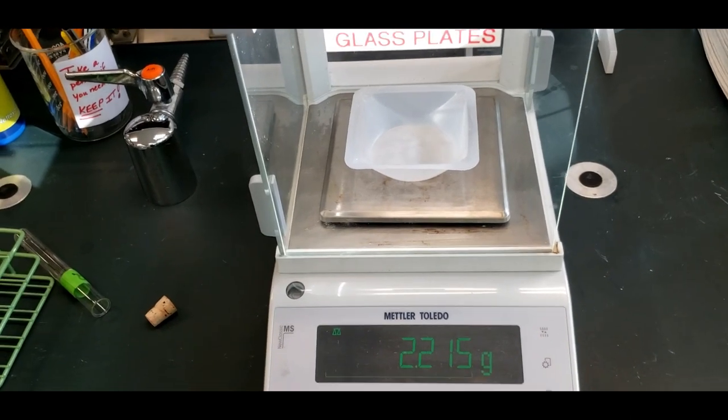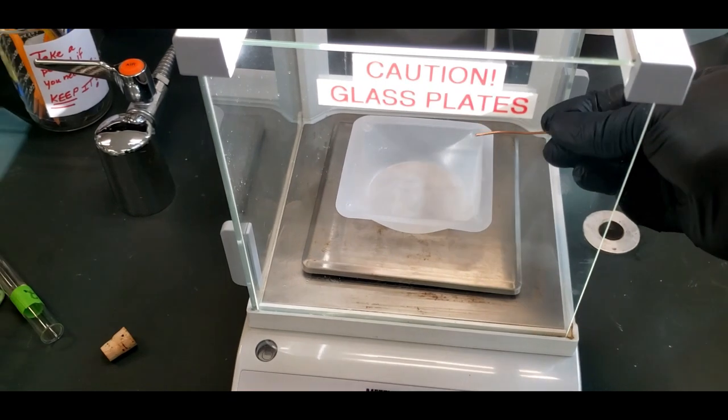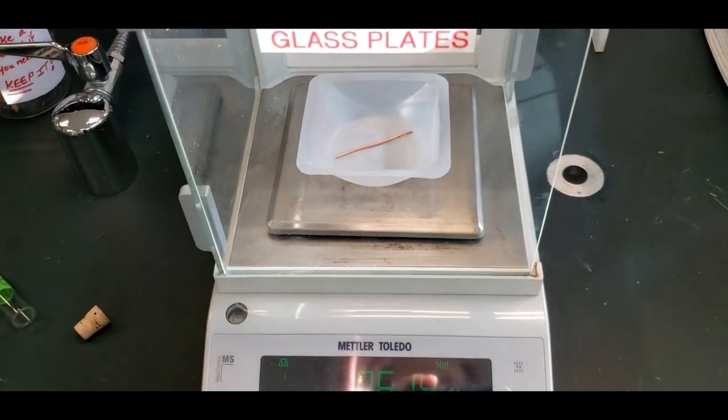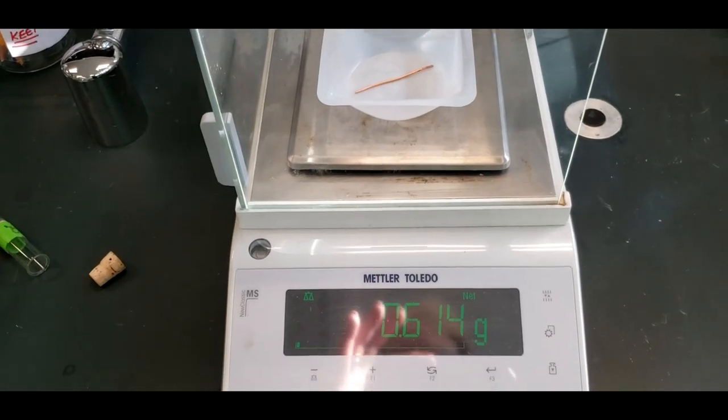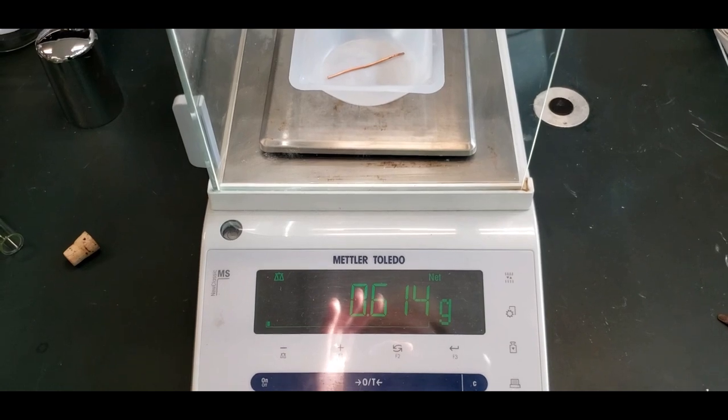We're going to weigh the copper sample. Got a weighing boat in there. It might roll off, so do that. And we have 0.614 grams for the copper.